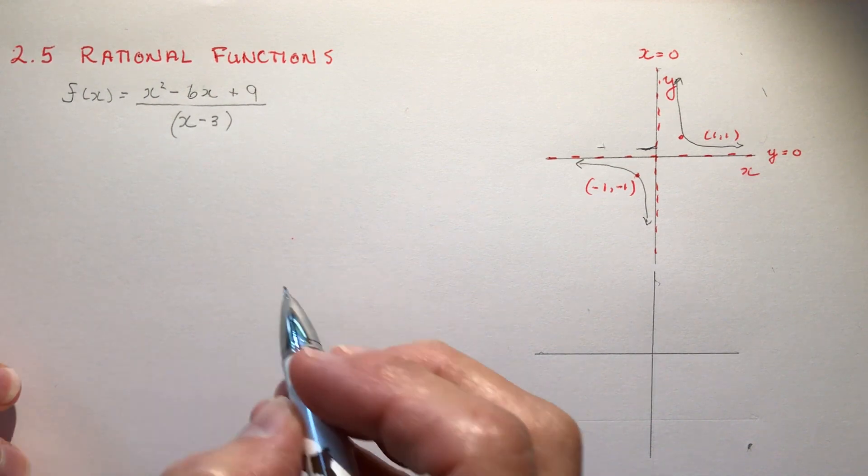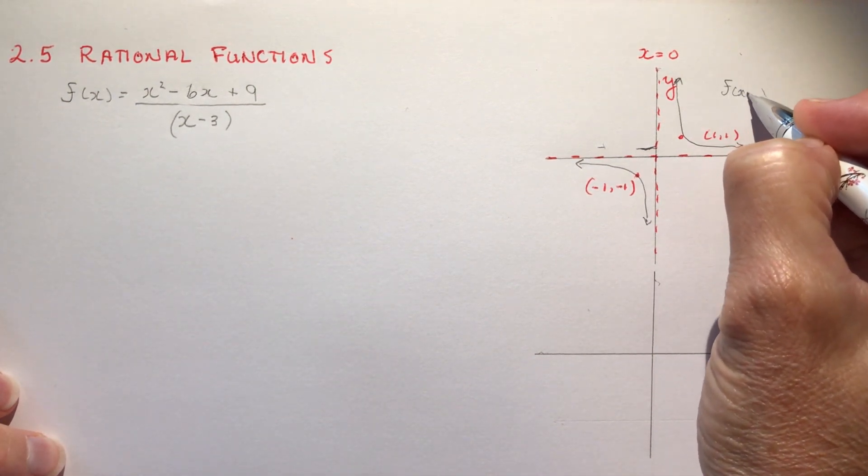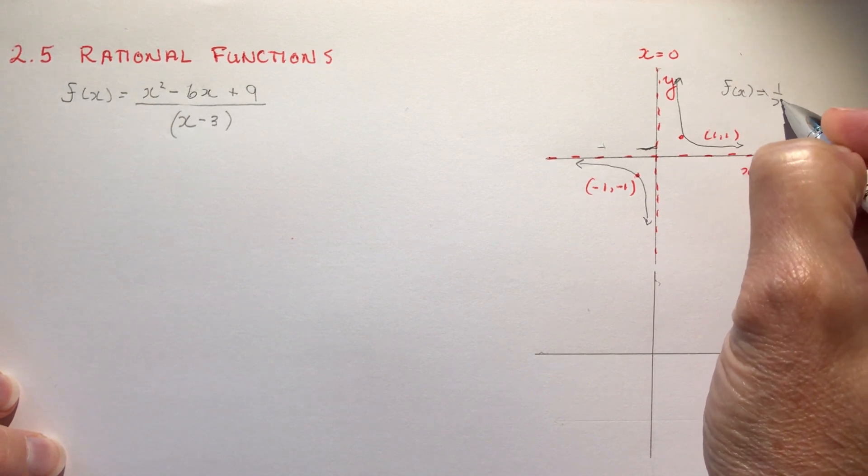So rational functions again are the graph of y equals 1 over x or in function notation f(x) equals 1 over x.